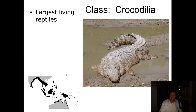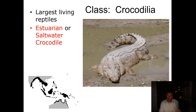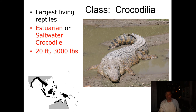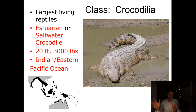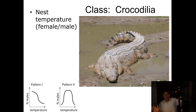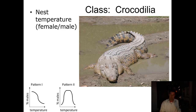Then we have the class Crocodilia — these are, of course, the crocodiles and alligators. There's really only one marine example. These are the largest living reptiles, and the largest of them is the estuarine, or saltwater, crocodile. They can get up to 20 feet and weigh 3,000 pounds, found in the Indian and Eastern Pacific Oceans from parts of India to Northern Australia and all the islands north of Australia, including Papua New Guinea. They're not considered endangered. They also have temperature-dependent sex, but they are a type 2 system, where low temperatures give you females, and so do high temperatures — it's the intermediate middle range that gives you males.